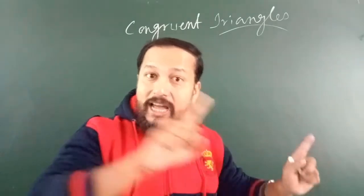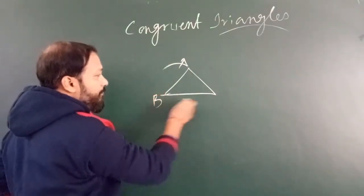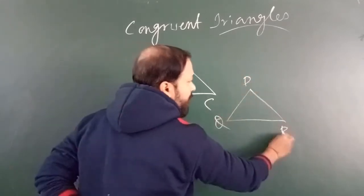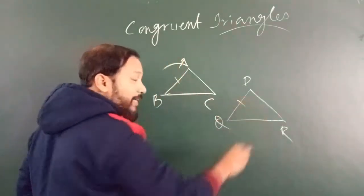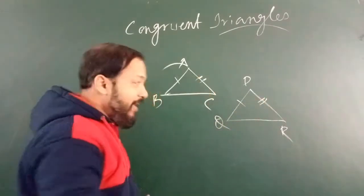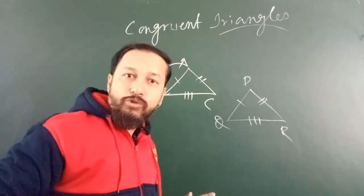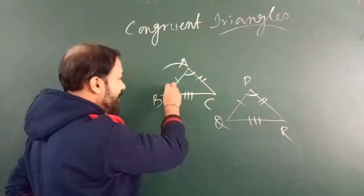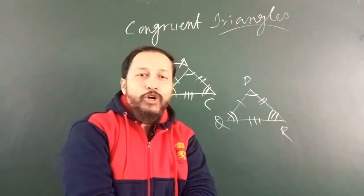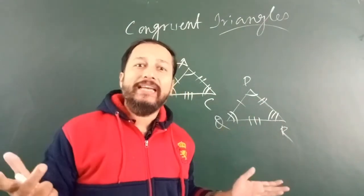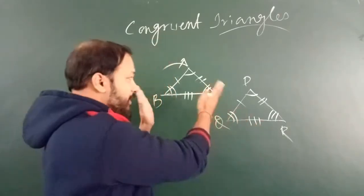Two triangles are same to same means their sides are equal and their angles are equal. Say this is triangle ABC and triangle PQR. So AB equal to PQ, AC equal to PR, and BC equal to QR — all three sides are same. Even all the angles are also same: angle A equal to angle P, angle B equal to angle Q, angle C equal to angle R. That means two triangles with equal sides and equal angles are congruent.